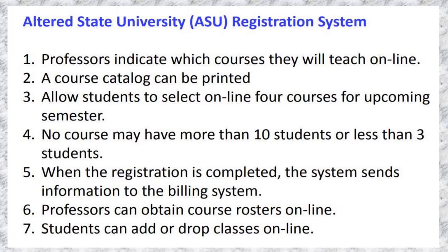First, professors indicate which courses they will teach online. A course catalog can be printed. Students are allowed to select online courses for the upcoming semester. No course may have more than 10 students or less than three students. When registration is completed, the system sends information to the billing system. Professors can obtain course rosters online, and students can add or drop classes online.